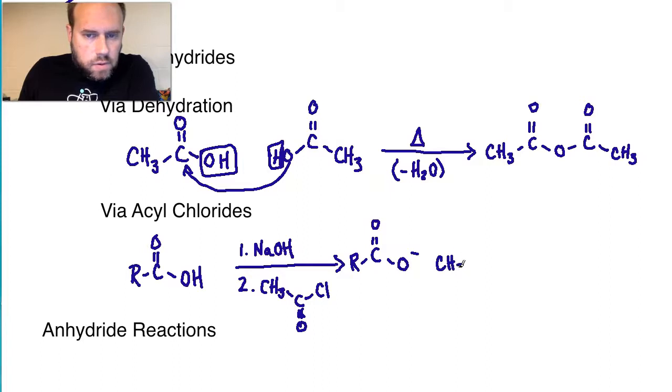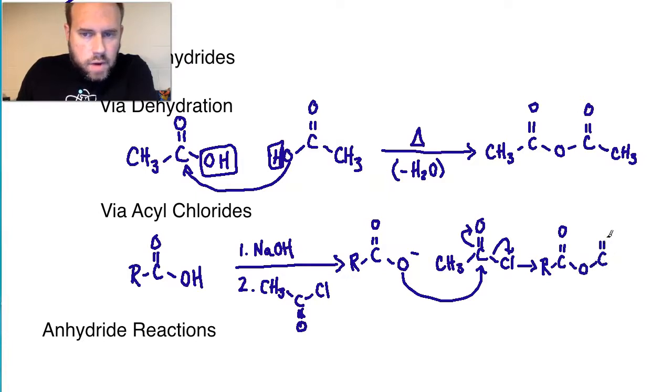When we've got the acyl chloride here, the chlorine group is going to leave as the oxygen would come in here. So technically, this would come up briefly, this would leave. And then the result that you would get in this case would be the portionality from the carboxylic acid, and then you would have the portionality that came from the acyl chloride. And you now have an anhydride that you've made using this technique.